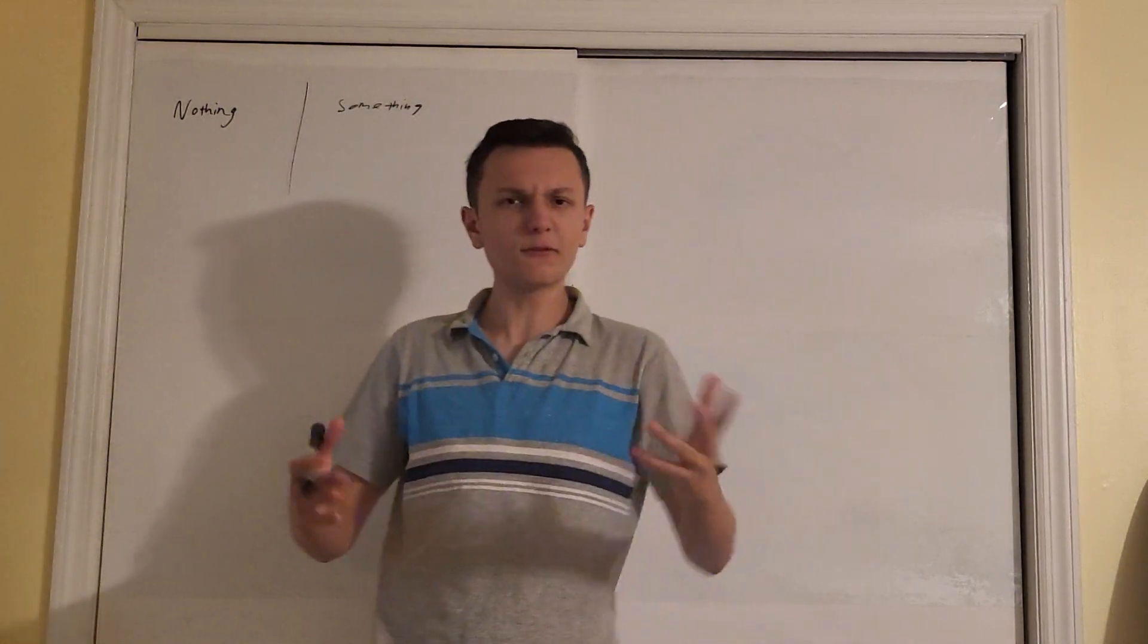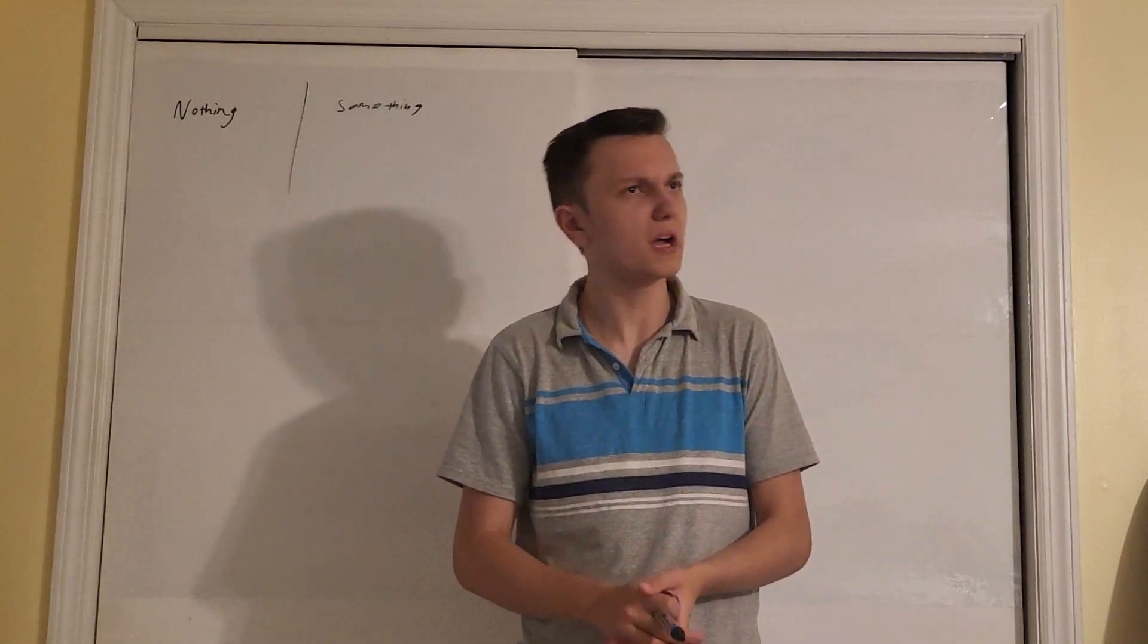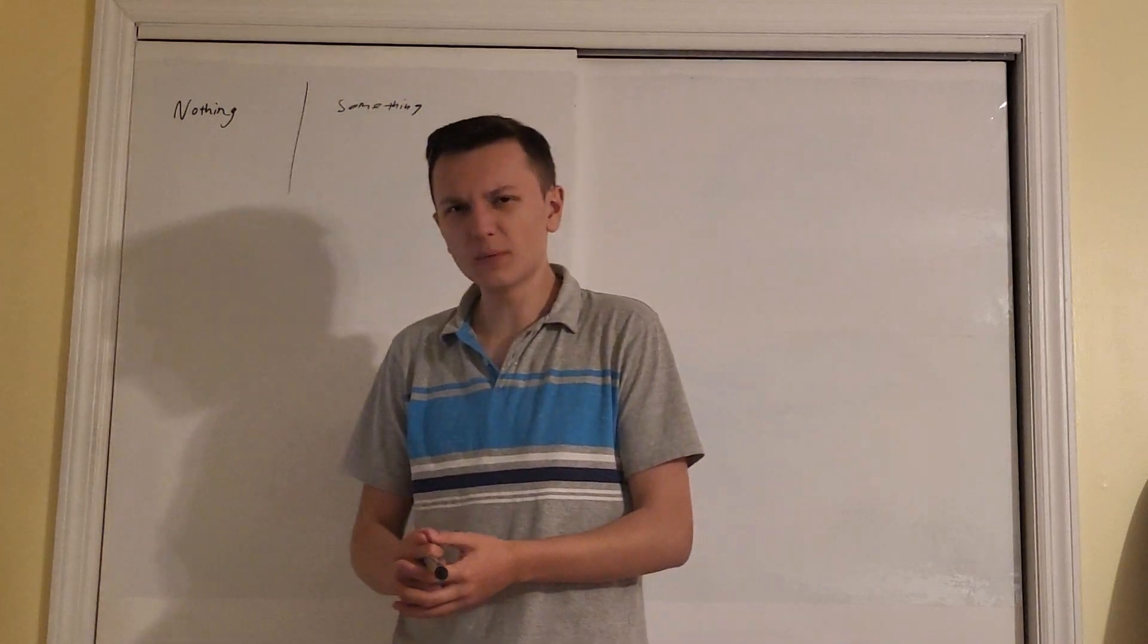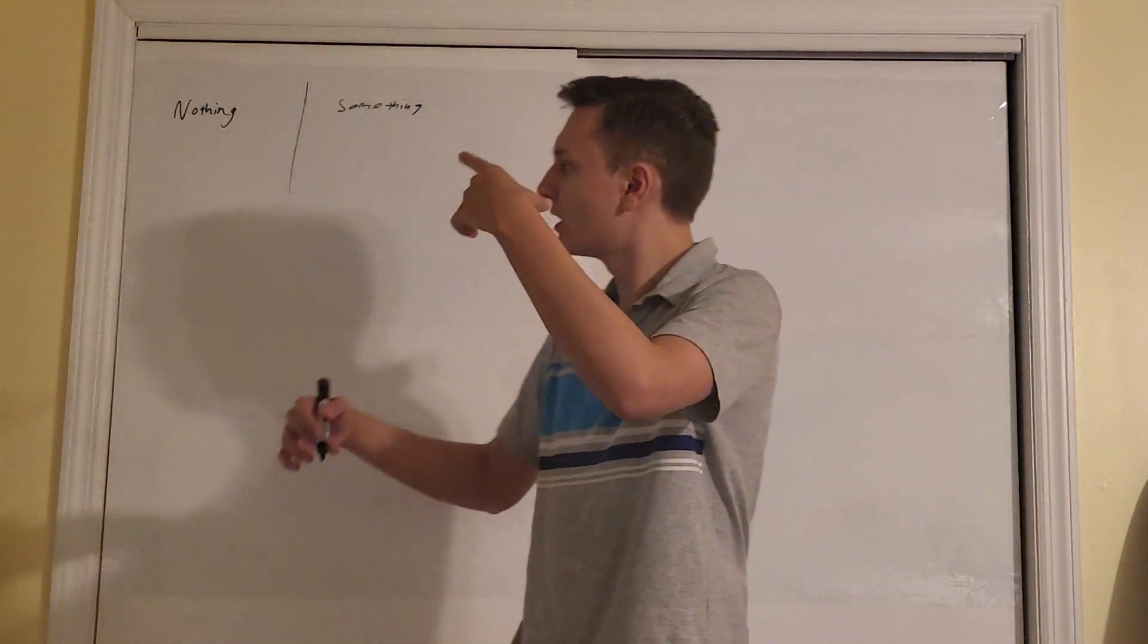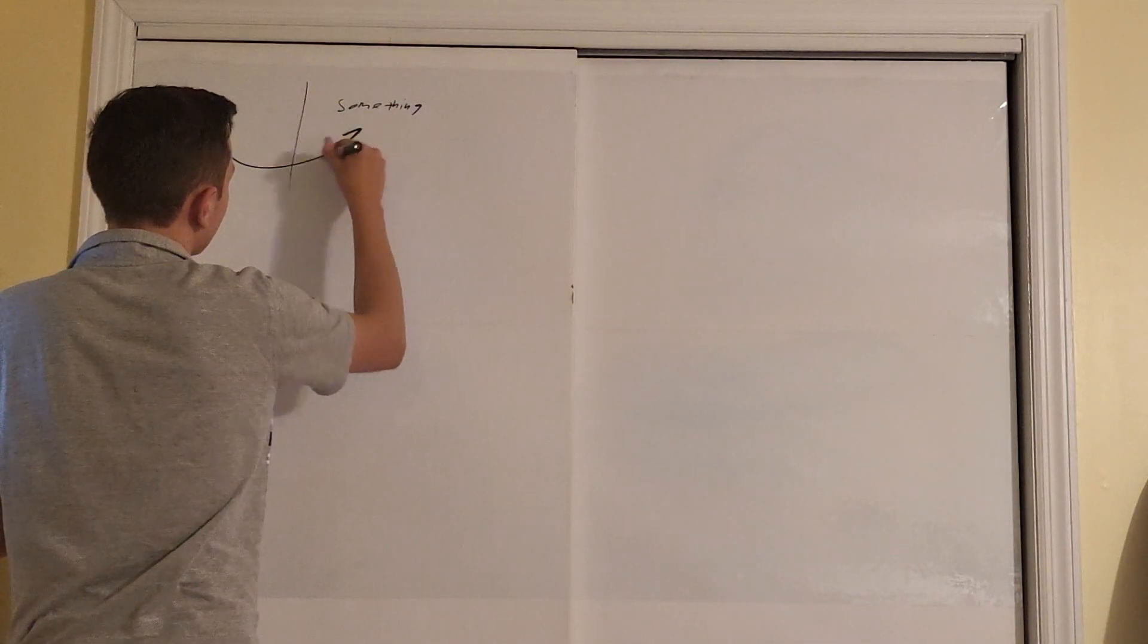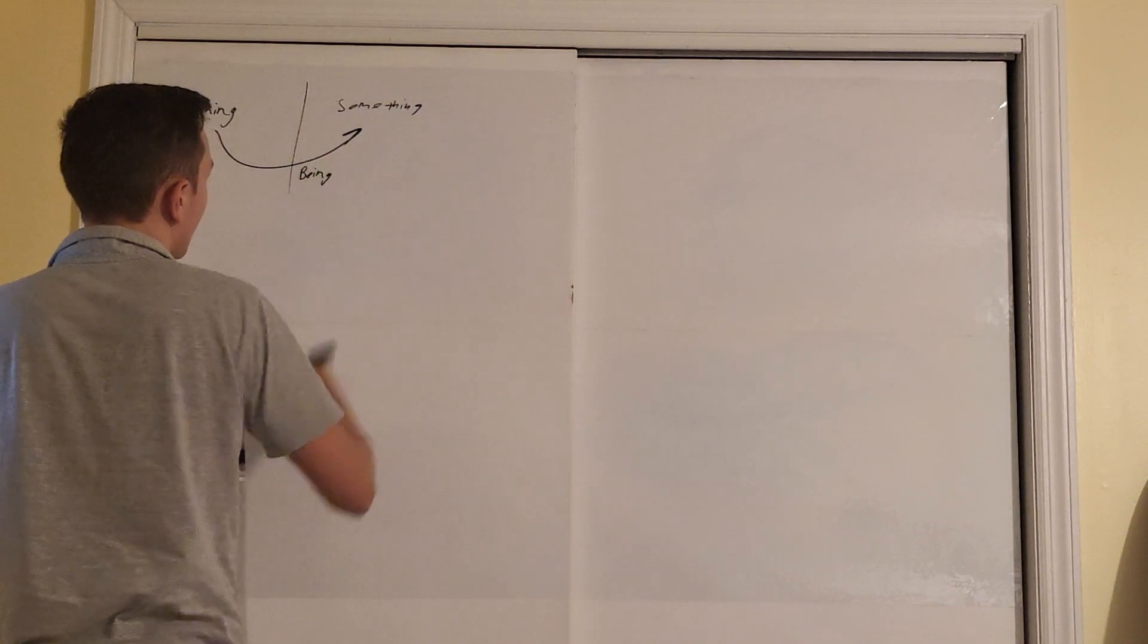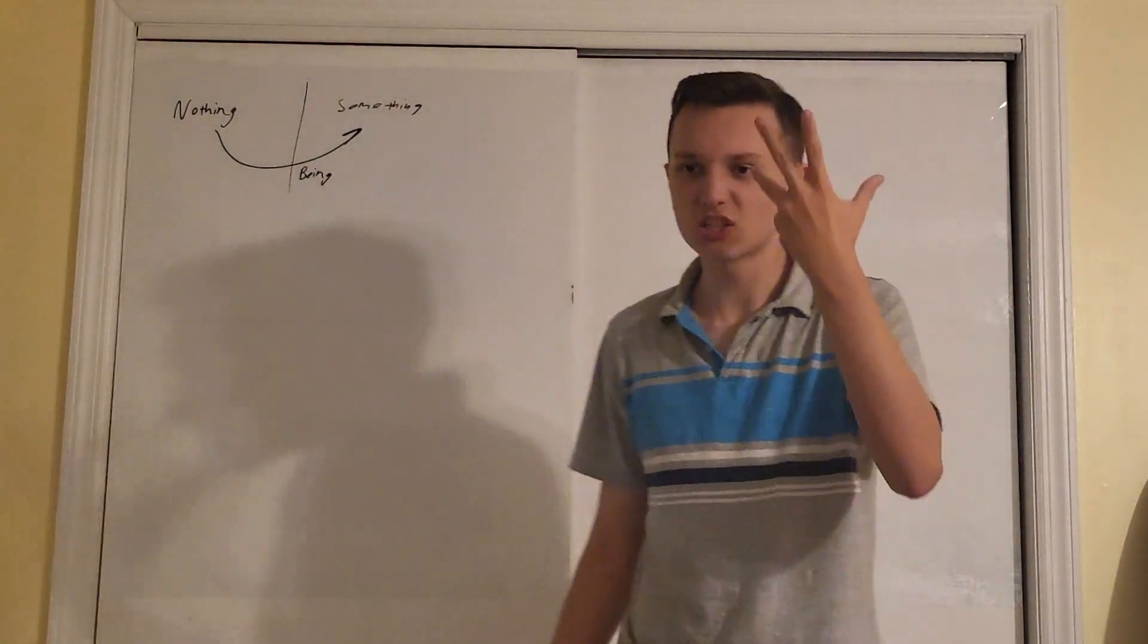You've got nothing and you've got something. What exactly differentiates these two things? Well, nothing I guess you could say is pretty self-explanatory - doesn't exist. Something - how can you determine if something is something? Well, an object becomes something when it comes into being. Only things that have being can be considered something.